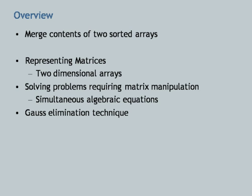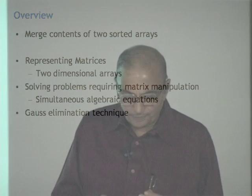After discussing the merge problem, we will look at matrices and their use in computational problems in science and engineering. We will take the example of solving a system of simultaneous equations, look at representing such a system using matrices, and then look at how such a system can be solved by a well-known method called Gauss elimination. You may not have studied Gauss elimination, but you are all familiar with matrices and matrix multiplication.